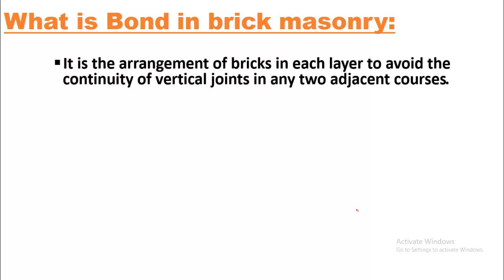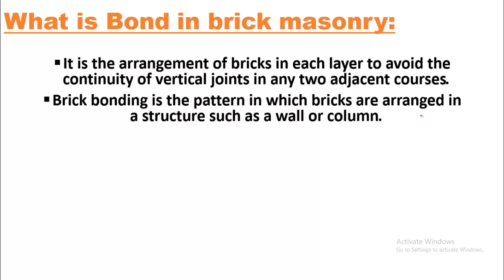Bond in brick masonry is the arrangement of bricks in each layer to avoid the continuity of vertical joints in any two adjacent courses. Brick bonding is the pattern in which bricks are arranged in a structure such as a wall or column — it defines how bricks are joined together.